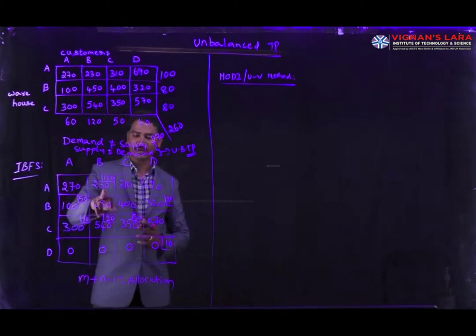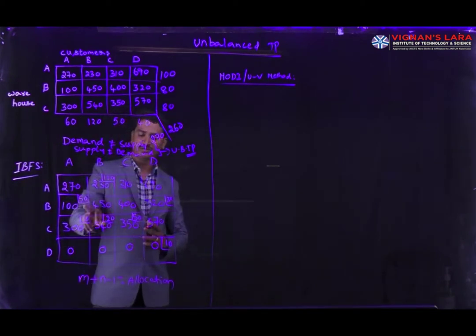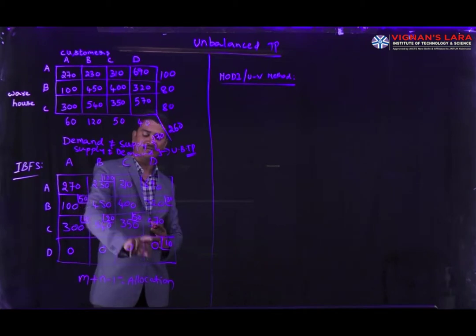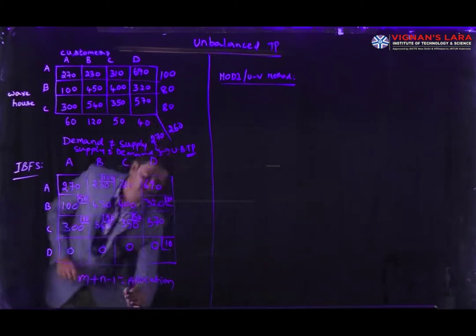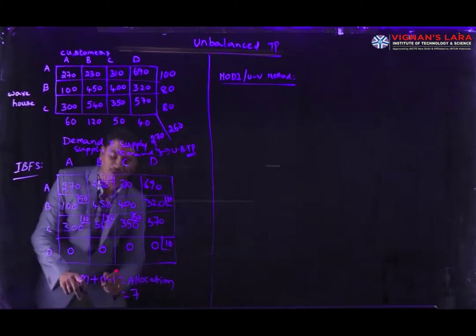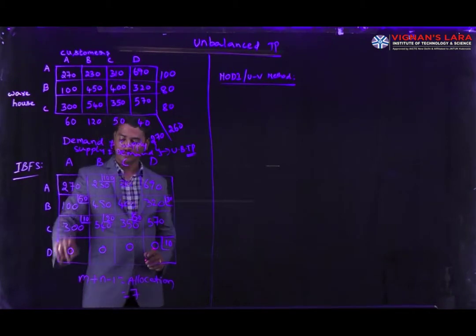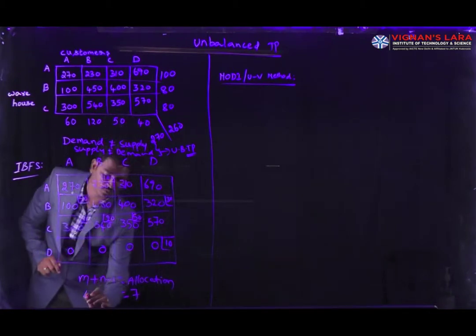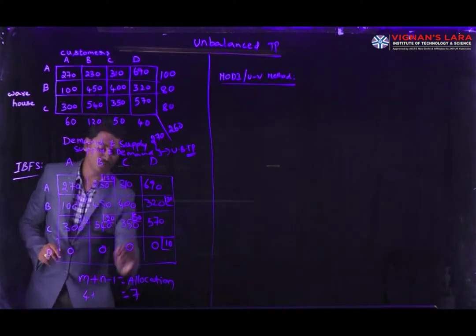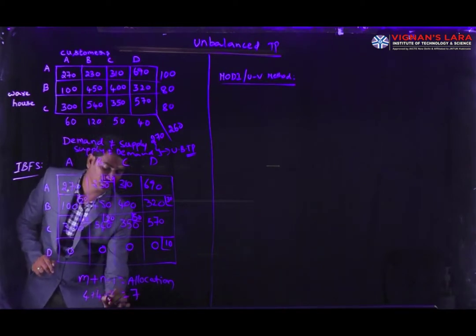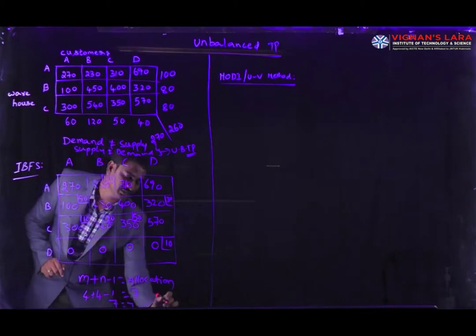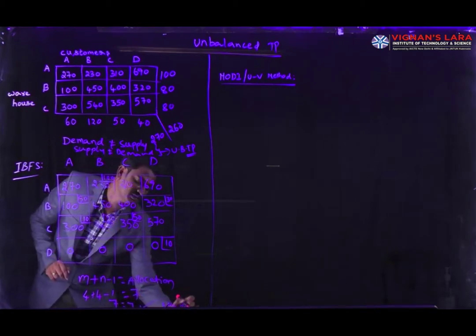We have 7 allocations. Including the dummy row, there are 4 rows and 4 columns. So M plus N minus 1 equals 4 plus 4 minus 1 equals 7, which equals 7. It is a non-degeneracy problem, so we are going to solve the problem directly using the UV method.